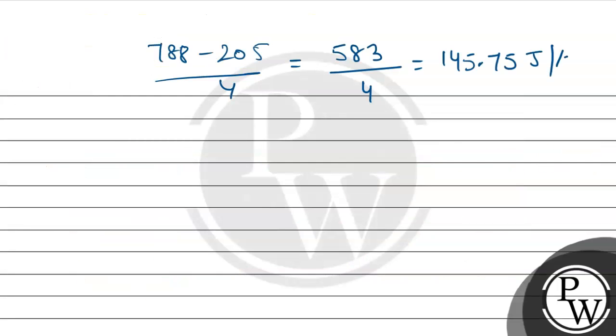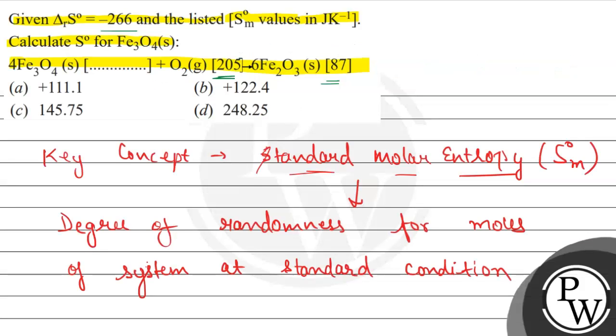Joule per kelvin, so by this we can see, joule per kelvin is the given option, so option C will be the correct answer for the same. So option C, 145.75, so let us write here, it is 145.75, and option A, B and D are incorrect. Hope you understood it well, best of luck. Thank you.